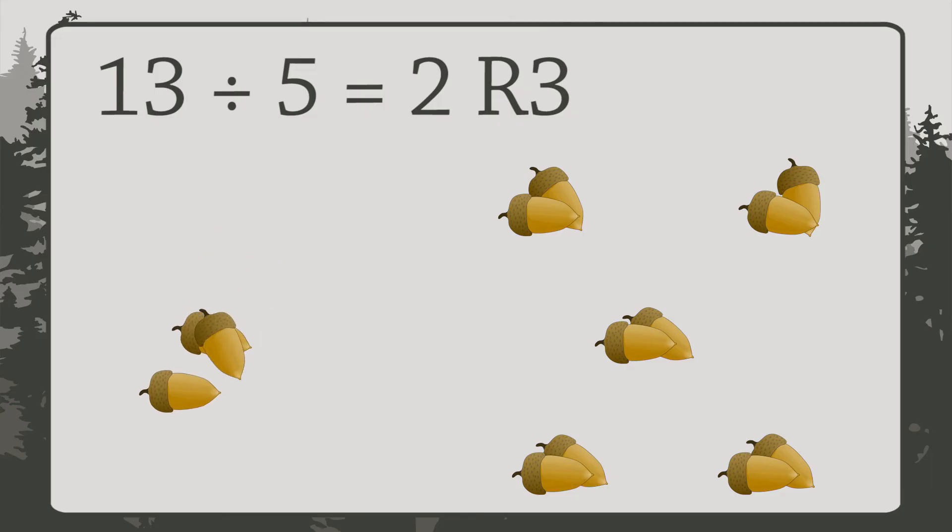The number of objects in each pile is called the quotient. If you divide 13 by 5, you get a quotient of 2 and a remainder of 3.